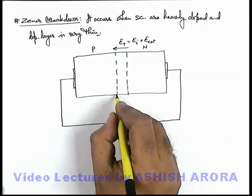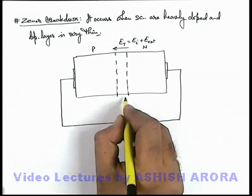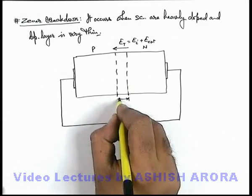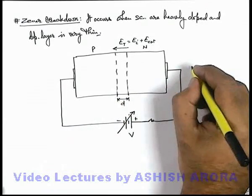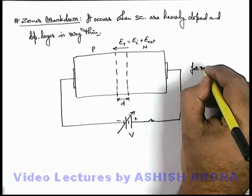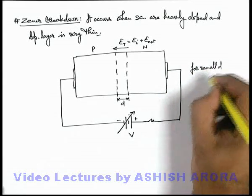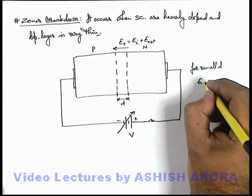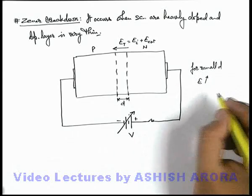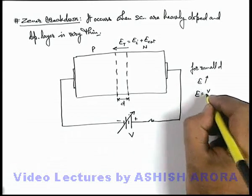And here we can say if the depletion layer width is very small—say if this thickness is d—then we can say for small d, the value of electric field will be very high, because we know that electric field we can write as V by d.